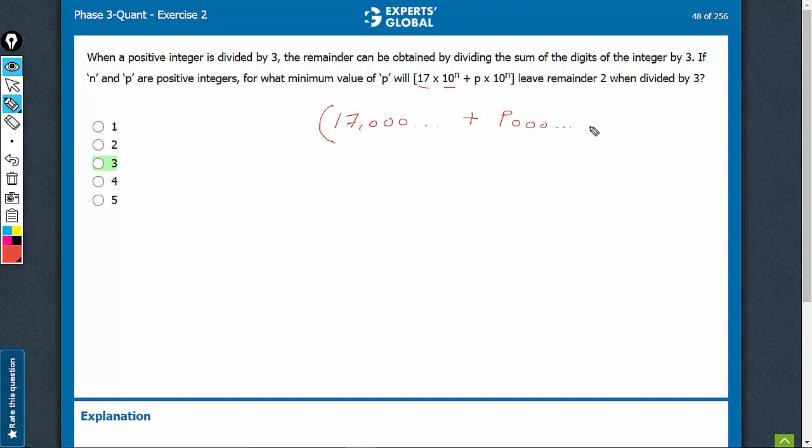What will be the remainder when this entire thing is divided by 3? The sum of the digits here is 8. 8 divided by 3 will give remainder 2. Therefore, 17 followed by any number of zeros will always lead to a remainder of 2. The sum of digits here is going to be p only.